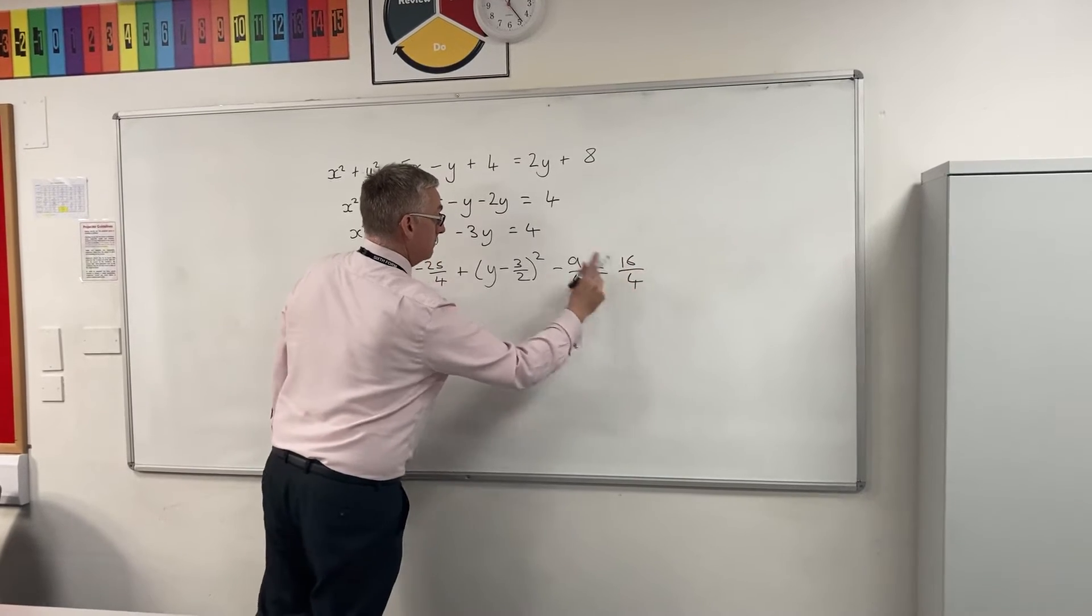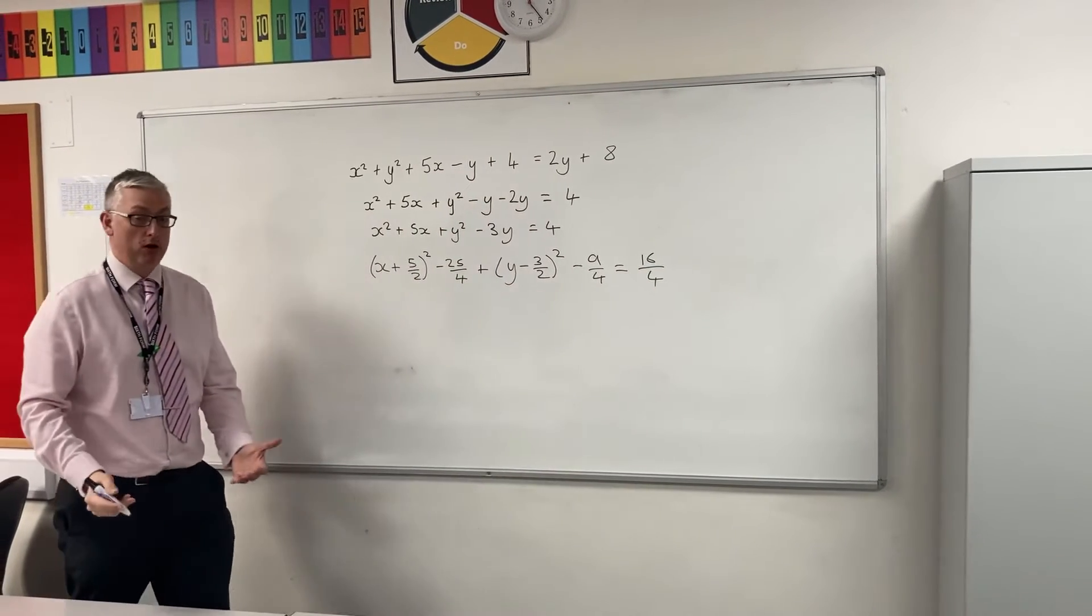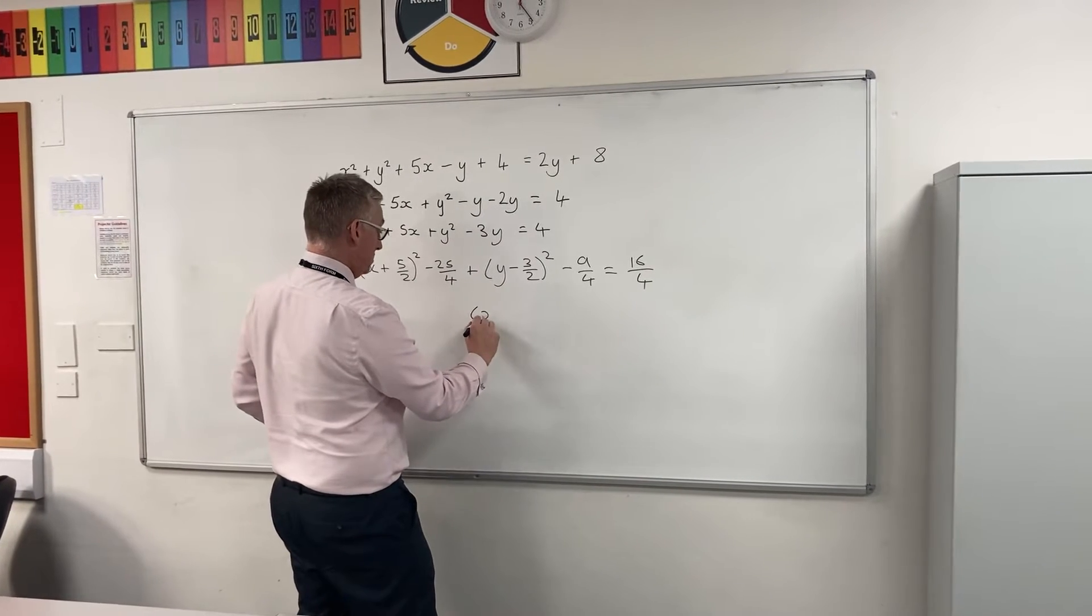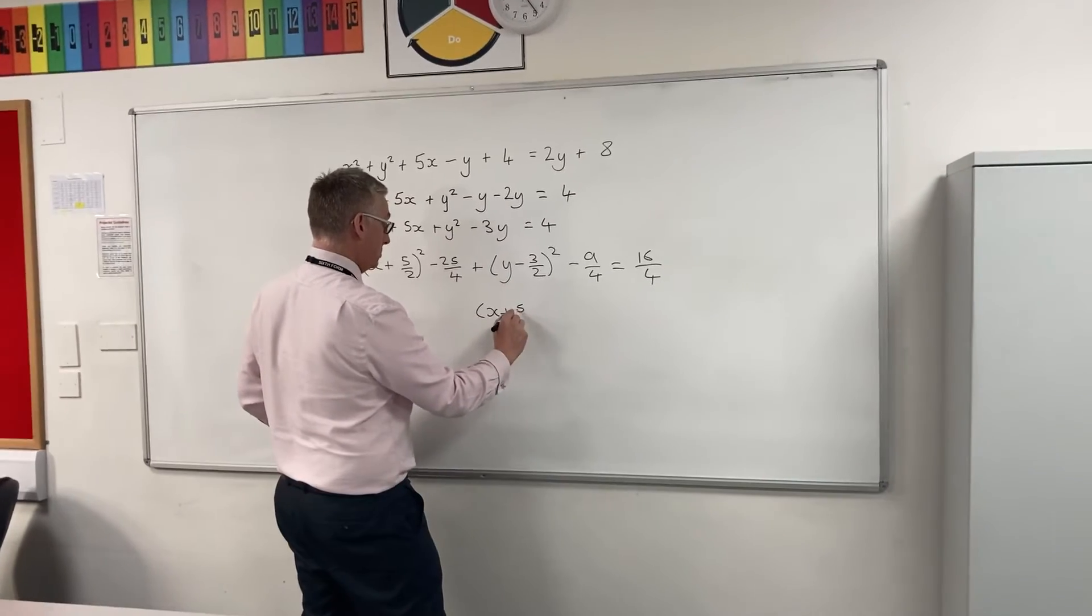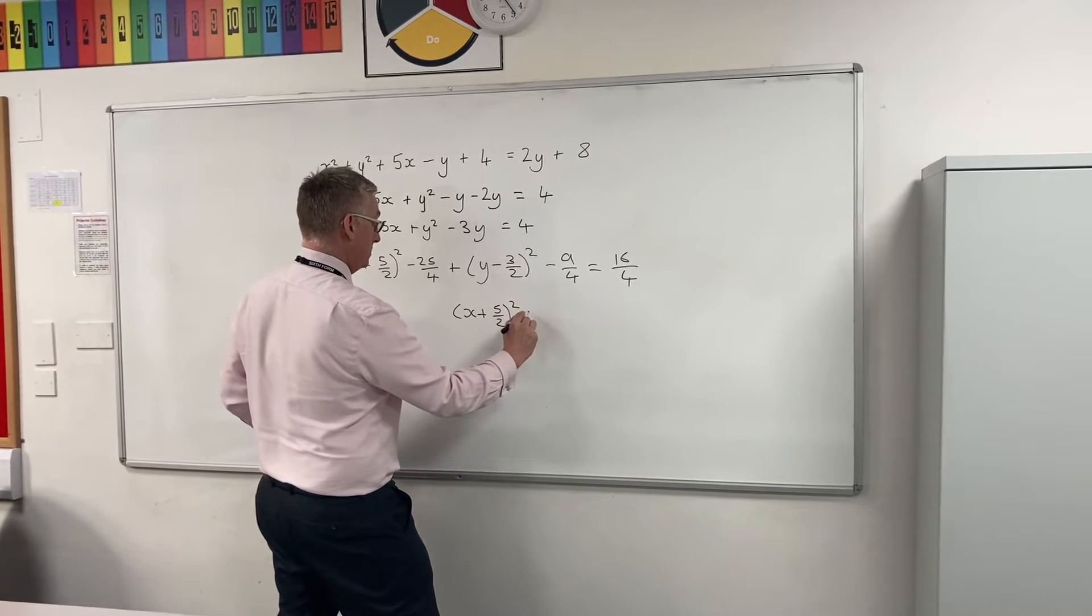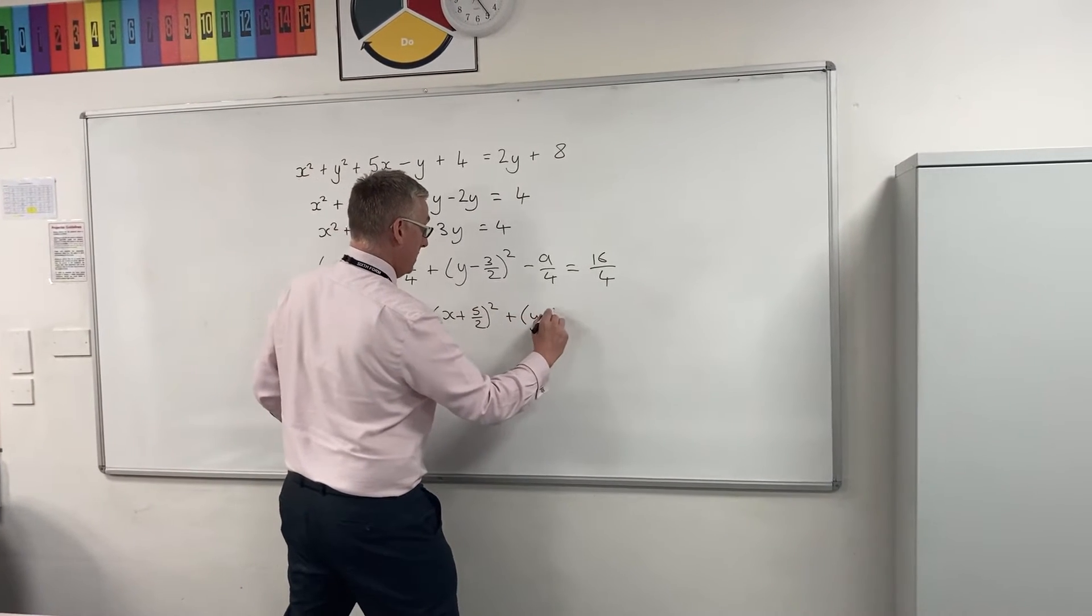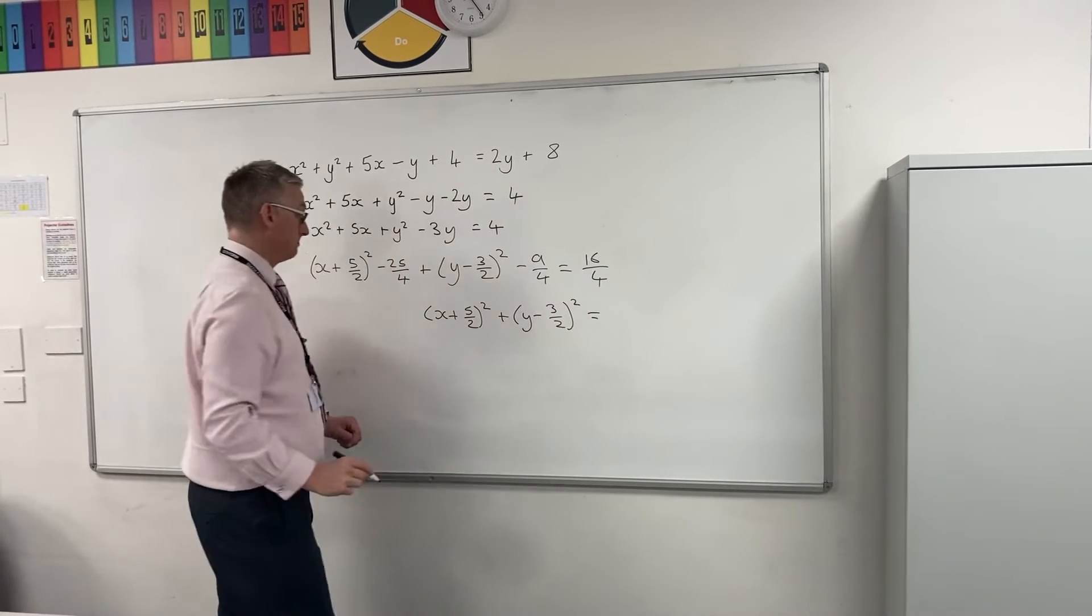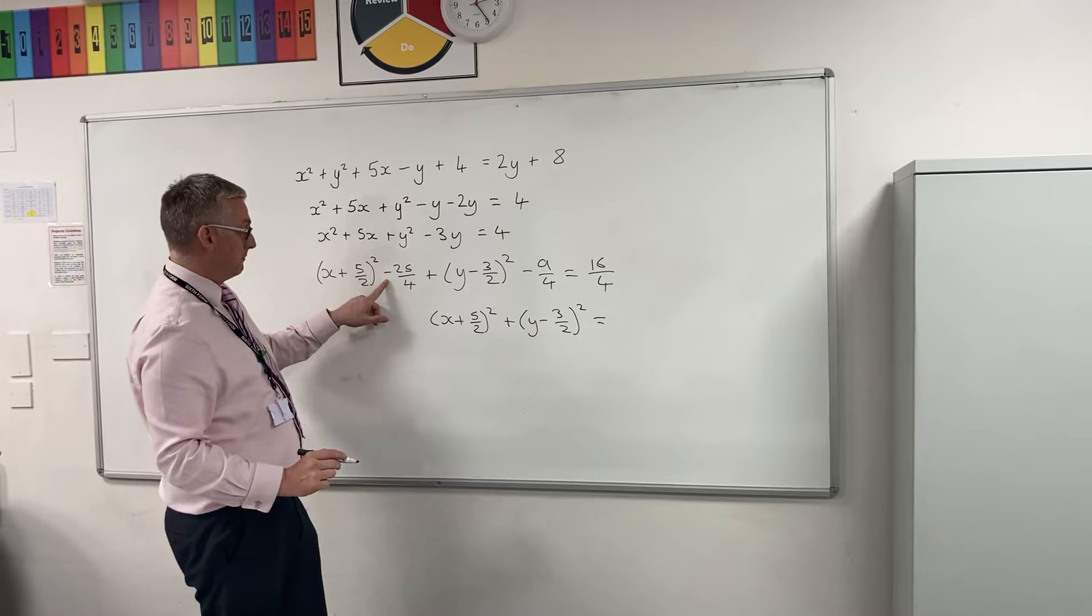And that is equal to 16 over 4. I've written 4 as 16 over 4 because I want to simplify everything. So there we go, x plus 5 over 2 squared, plus y minus 3 over 2 squared.